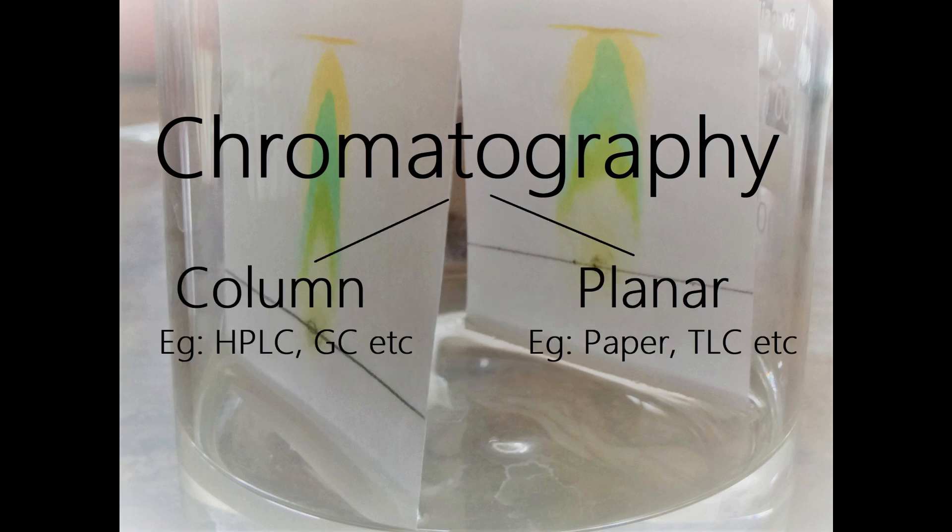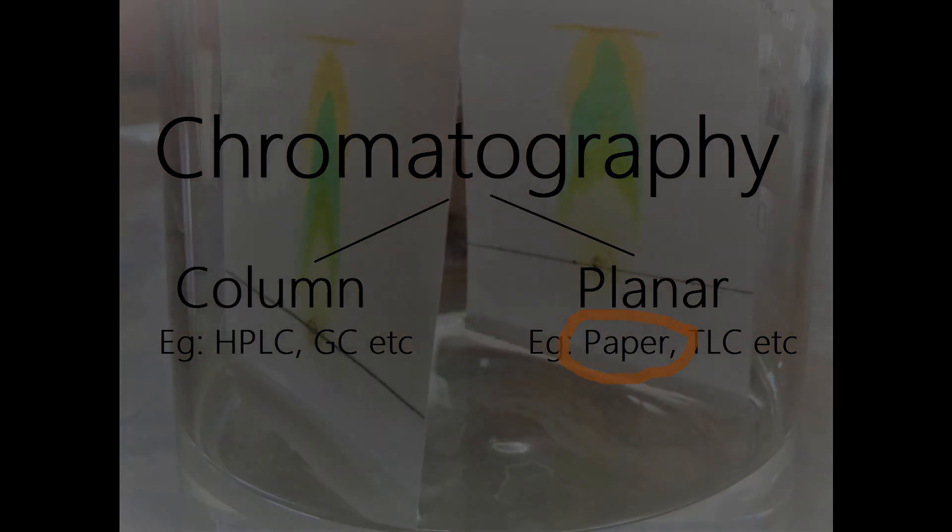Chromatography is of two types, column chromatography and planar chromatography. Paper chromatography is a subtype of planar chromatography that uses a superior quality filter paper, usually the Whatman No. 1 filter paper as the stationary phase.